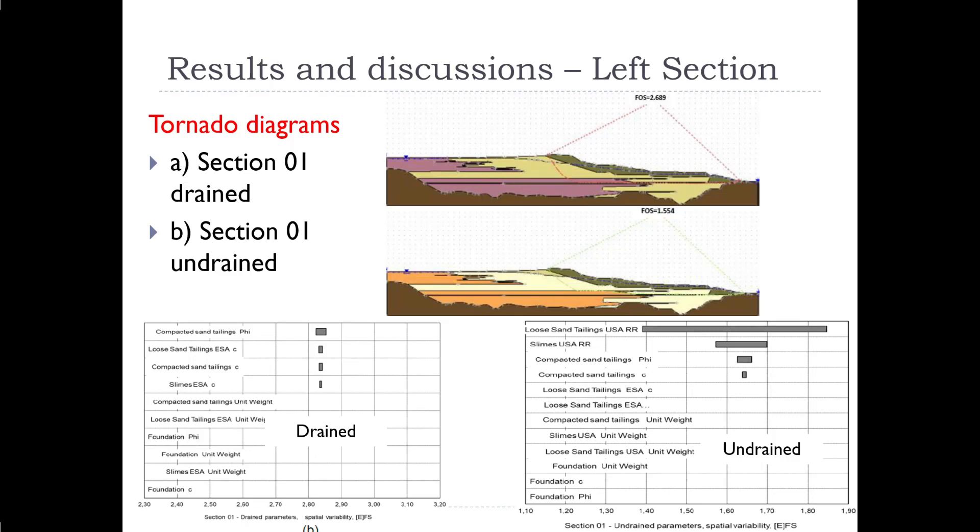On the right hand side, we have the undrained scenario, and you can see that the loose sand tailings R parameter has the ability to vary the material, the factor of safety, a lot more significantly between approximately 1.4 and up above 1.8. So that's the highest parameter that has the ability to vary the factor of safety. And we start to get an idea for what is the variability for these parameters.